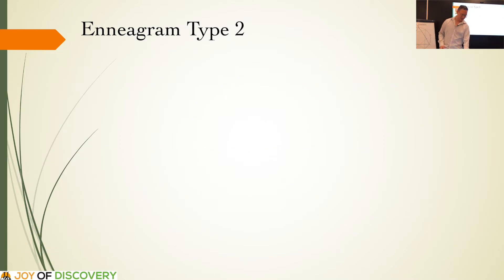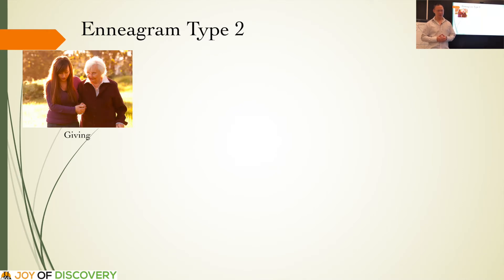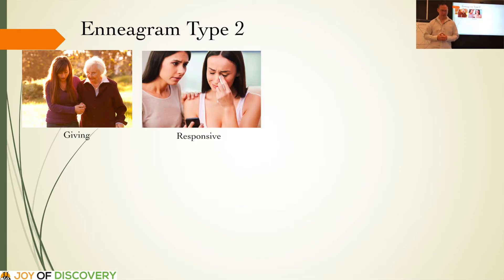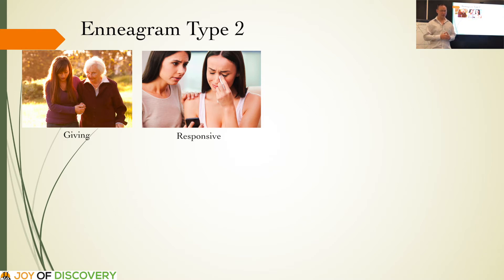Enneagram Type 2. Twos are giving people. They are warm, gentle, and kind-hearted, and they move towards people in affection. Twos are also loving people and they give of themselves to relationships that are meaningful to them. They are pleasant and helpful, dedicated and devoted to those they love and care about. Twos are often the most responsive people to meet your physical needs — they may even know what you need before you know it yourself. They are attuned to other people and will be the first to hand you a tissue if you break down crying.